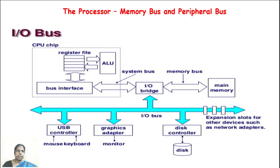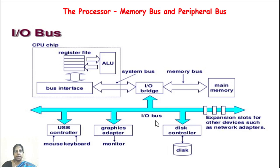This slide shows the processor memory bus and peripheral bus. The CPU chip is connected to peripheral devices such as USB controller, graphics adapter, disk controller, etc., through the I/O bus or peripheral bus. This diagram specifies two buses: one is the system bus and another is the memory bus.